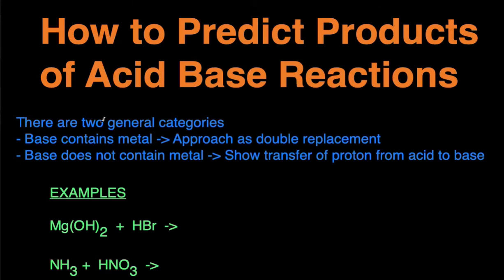Acid-base reactions can be broken down into two general categories based on the makeup of the base. If you look at the base and the base contains a metal, then you're going to approach this problem as if it was a double replacement reaction and use that to help you predict the products.